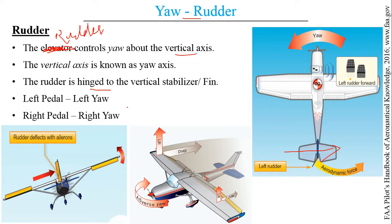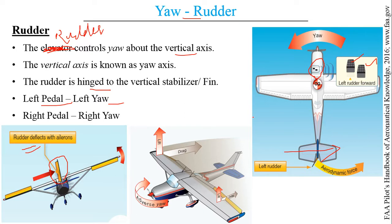Yaw is controlled by pedals in the cockpit. Pressing the left pedal causes the aircraft to yaw towards the left direction, and pressing the right pedal causes a right yaw. When the ailerons are deflected, there is an additional adverse yaw caused by differential lift and drag. To control this adverse yaw, the rudder is also deflected along with the ailerons, which conveniently controls the adverse yaw.